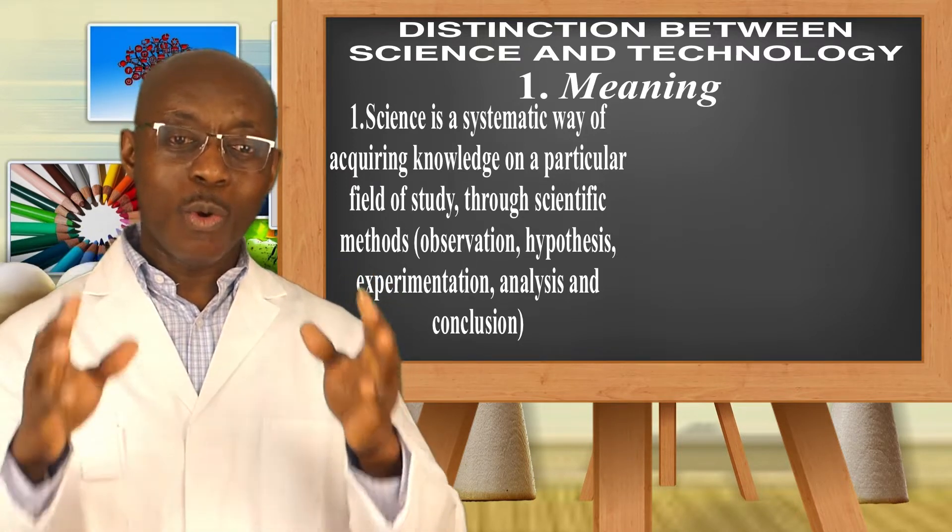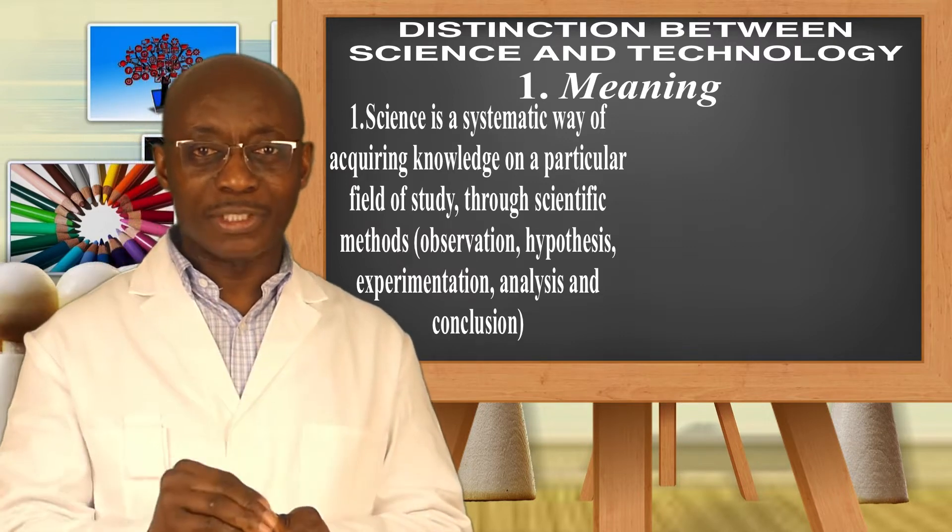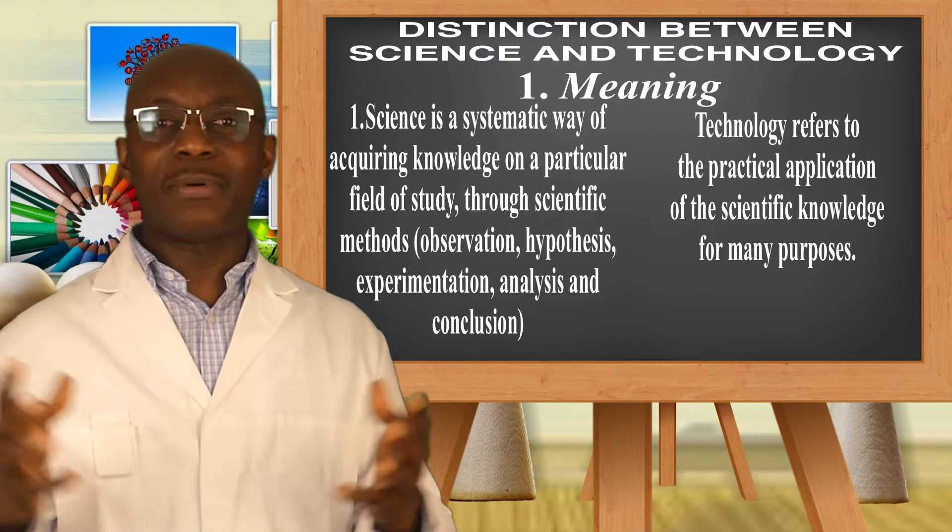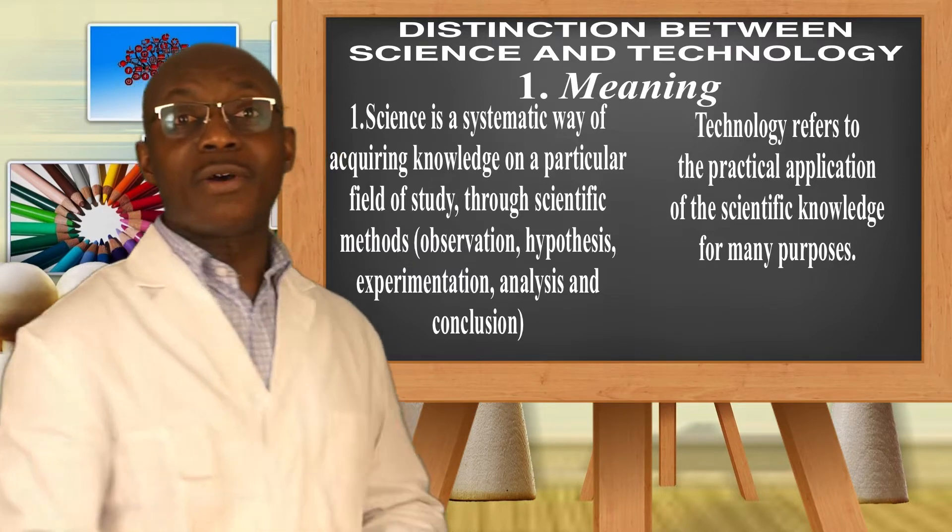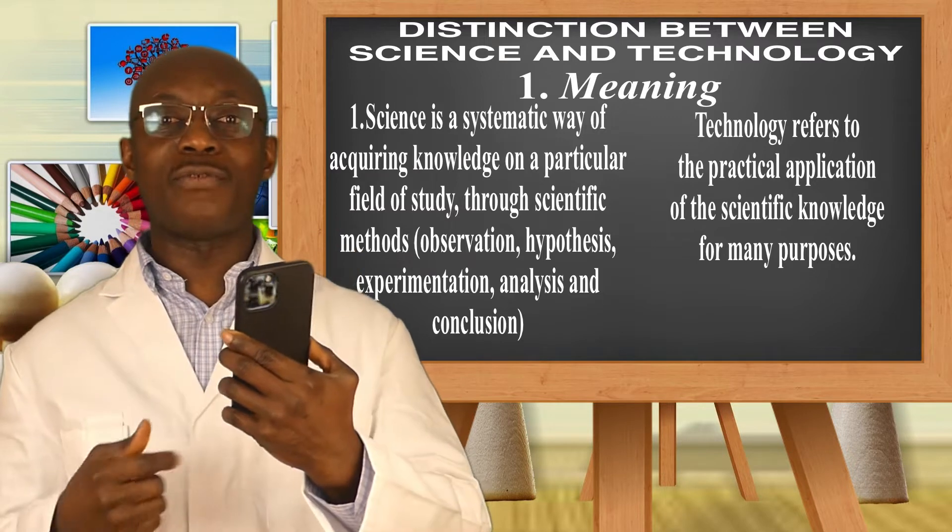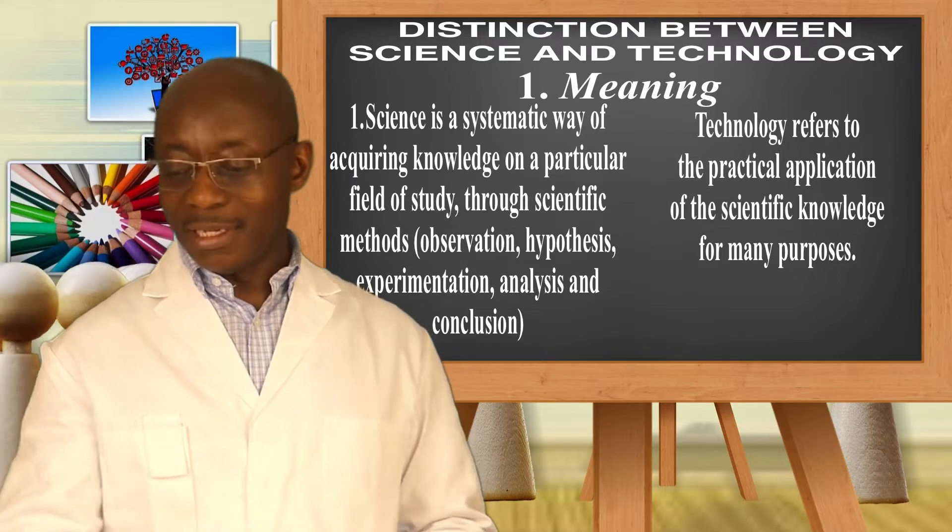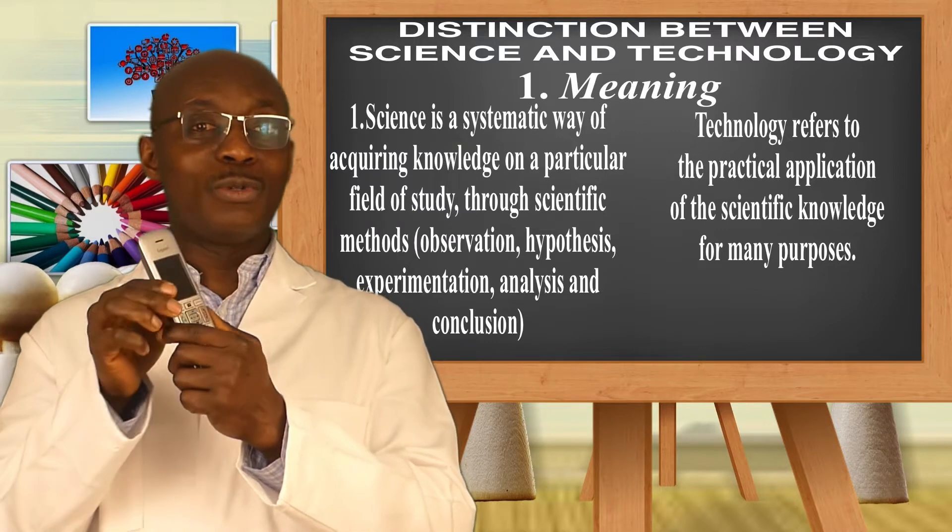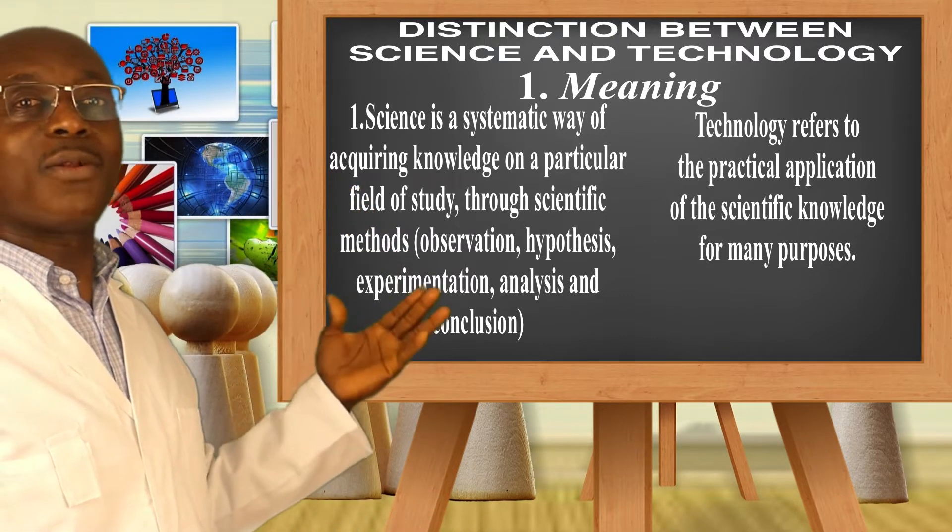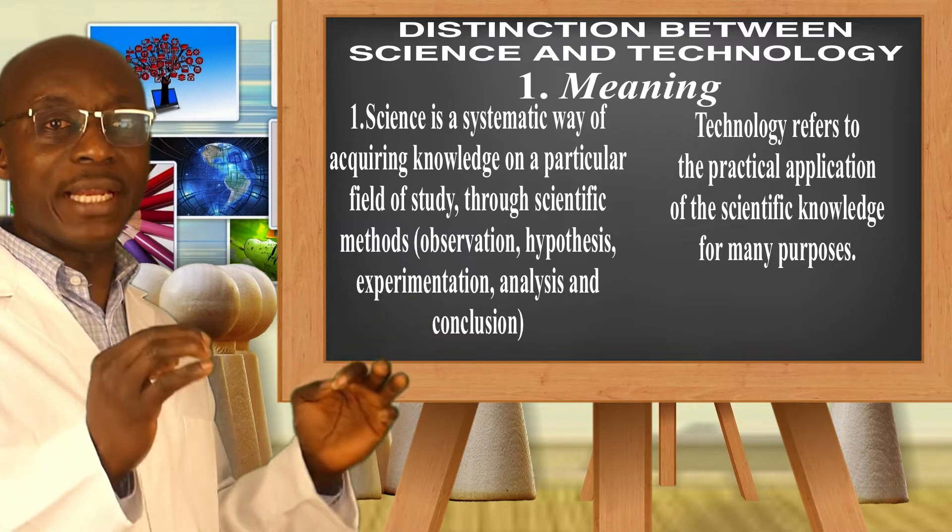Just trying to find out why and how certain things exist in nature. However, when you come to technology, the meaning is that it refers to practical application of scientific knowledge for many purposes. For instance, due to technology, we have mobile phones for communication purposes and other purposes. I use my mobile phone for editing my videos and so on and so forth. So that is technology. If you take this, this is a landline phone. We also use this for communication purposes, and there are all other forms of technology that we have.